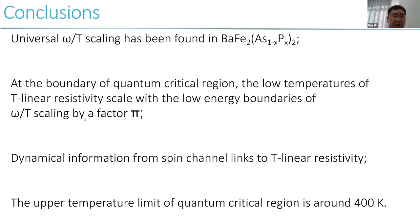I think it's time to make some conclusions. We found a universal omega alpha T scaling in the phosphorus-doped barium-122 system. At the boundaries of the quantum critical range, we found that the low temperatures of T-linear resistivity scale with the low energy boundaries of omega/T scaling by a factor of π. The dynamical information from the spin channel found in the omega alpha T scaling links to the T-linear resistivity. The upper temperature limit of the quantum critical range in these systems is around 400 Kelvin. Thank you very much.